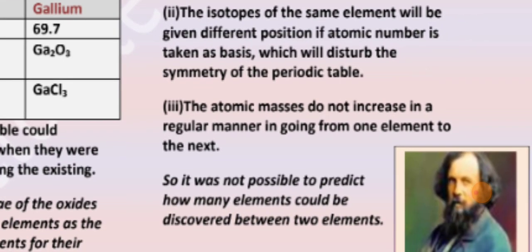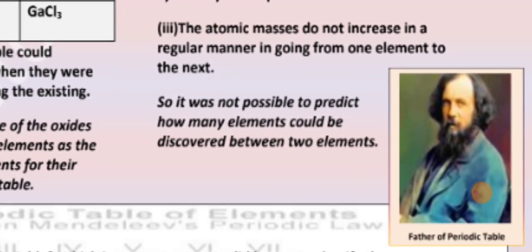The atomic masses do not increase in a regular manner in going from one element to the next. This was a limitation - that from one element to another element, he couldn't predict how many elements could be discovered between them. So it was not possible to predict how many elements could be discovered between two elements.